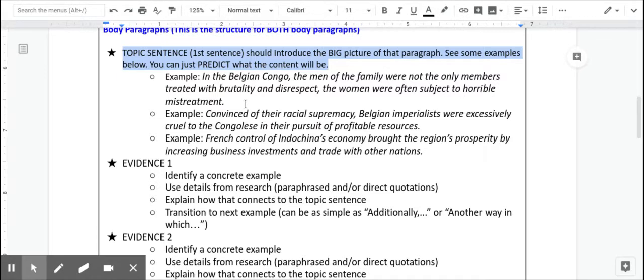I just cut and pasted these from some old essays. So if I look at the second one, for example, it says, convinced of their racial supremacy, Belgian imperialists were excessively cruel to the Congolese in their pursuit of profitable resources. So I can predict in this paragraph, there's going to be examples of all the physical cruelty that the Congolese were subjected to in order to get rubber in the Congo. So again, the evidence is just, here's an example of the cruelty. Here's another one. Here's another one. The first sentence just sets us up for that.